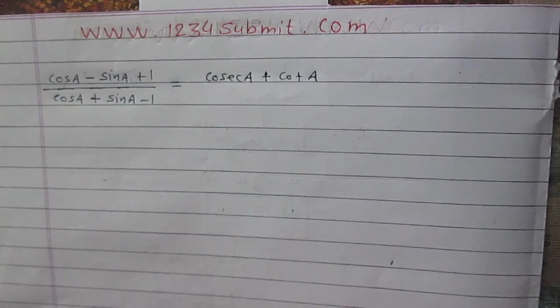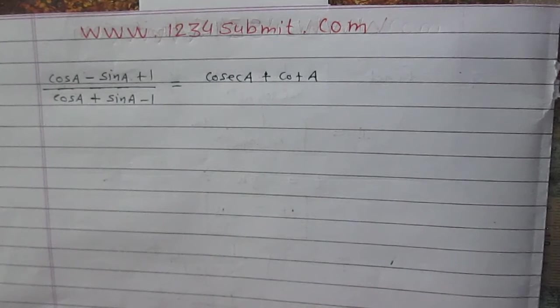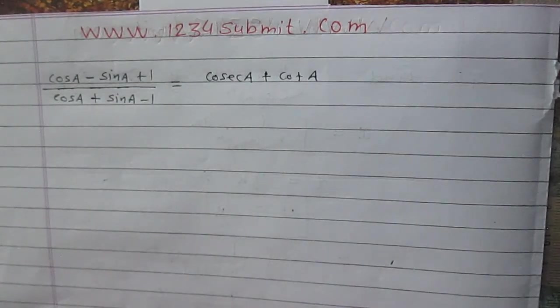Prove that (cosA minus sinA plus 1) divided by (cosA plus sinA minus 1) is equal to cosecA plus cotA.